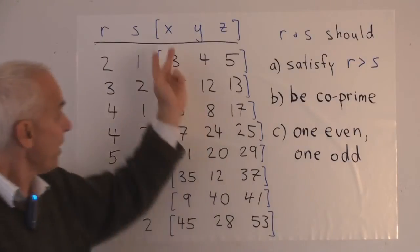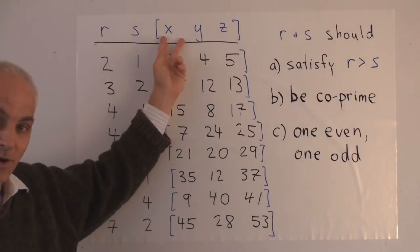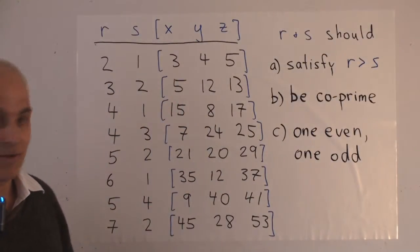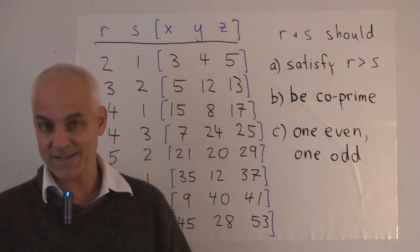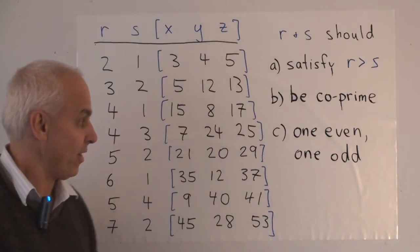And if they're both odd, then x, which is r²-s², it's a difference of two odd numbers, it's going to be even. y is always even because it's 2rs. And z, which is r²+s², will also be a sum of odd numbers, so it'll be even as well.